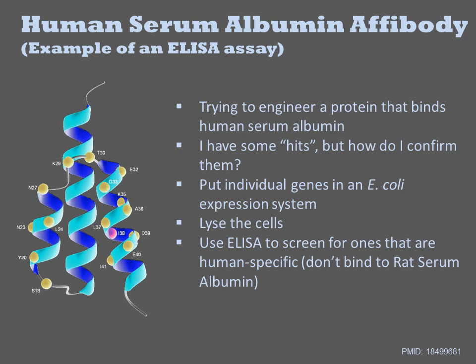First, I will overexpress a gene encoding the alpha-body in E. coli, lyse the cells, and purify my protein. I will then perform ELISA to determine whether the protein binds to human albumin and not other albumins such as rat.